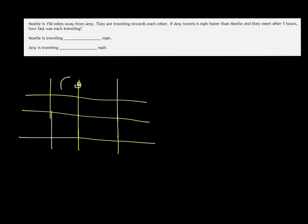It's helpful to draw a table for these. Distance equals rate times time, so in my table I write rate times time equals distance. We're talking about Noelle and Amy, and then we have total.